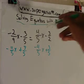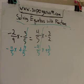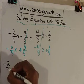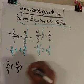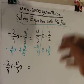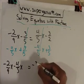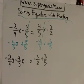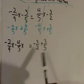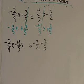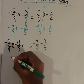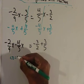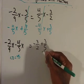After canceling, we have negative 2/9 x minus 4/5 x on the left, and negative 3/2 plus 3/5 on the right. To combine these like terms, the fractions need the same denominator. On the left side, the common denominator would be 45. On the right side, the common denominator would be 10.